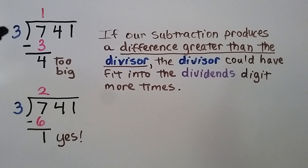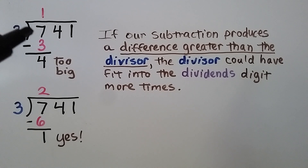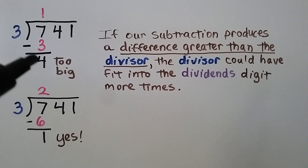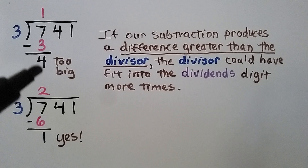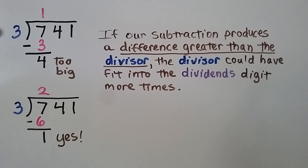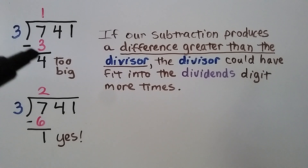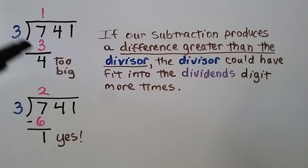Here we have 741 divided by 3. When the problem was being done, the person thought 3 goes into 7 only 1 time. So they did 3 times 1 which is 3, subtracted and got a 4. But this 4 is too big. If our subtraction produces a difference greater than the divisor — 4 is greater than 3 — the divisor could have fit into the dividend's digits more times. 3 fits into 7 two times: 3 times 2 is 6, and we get 1 for our difference. Make sure you fit the divisor enough times so your difference is not bigger than the divisor.